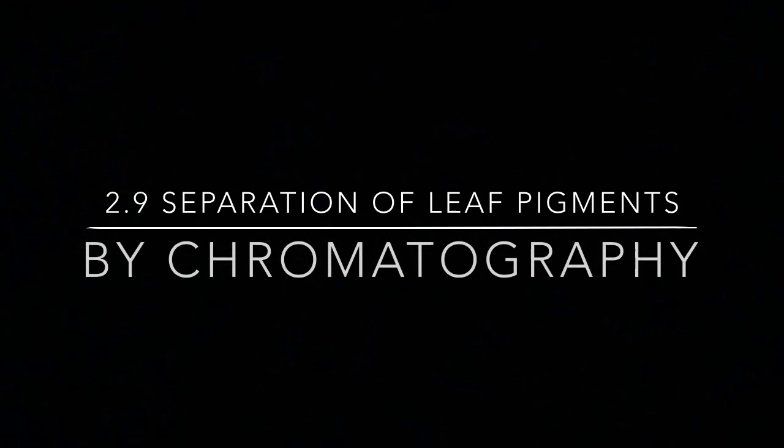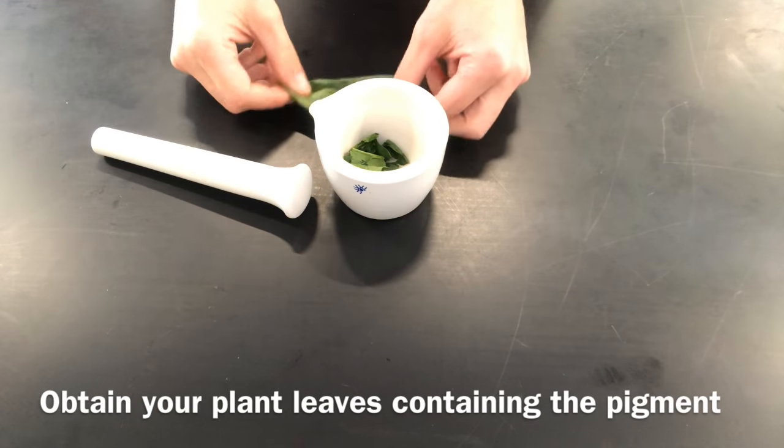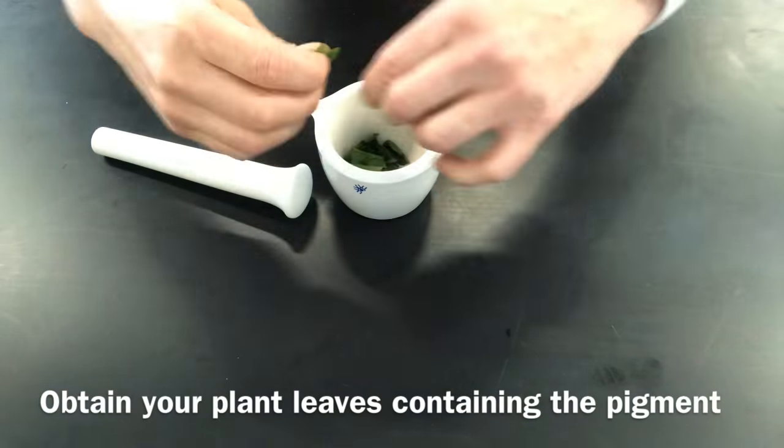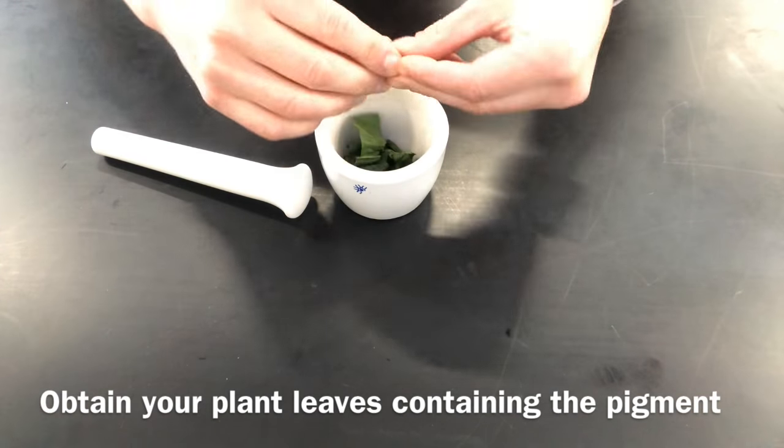In this video, I'll show you the protocol that's one of the core practicals in IB biology, illustrating how you can separate leaf pigments by a process known as chromatography. In this example, I'm going to use spinach leaves. So the first step is for you to obtain your plant that contains the pigments you wish to separate.